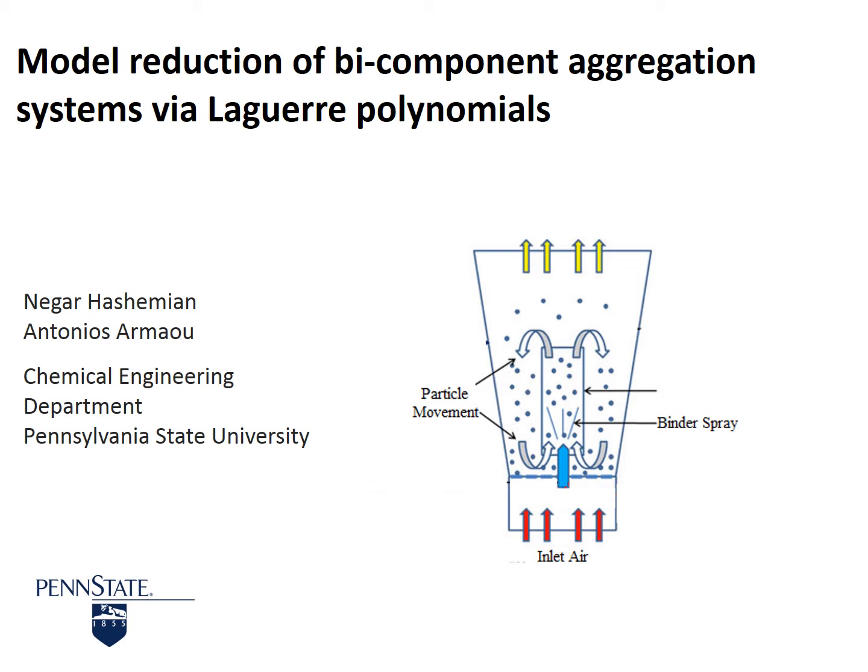Hi, I am Negar Hoshemyan from Penn State University and my advisor is Dr. Armal. Today I am going to present a new method to reduce wet granulation models in the Wurster unit. There are many dynamic systems in nature which consist of particles. Two-component granulation, which is widely used in pharmaceutical applications, is an example of these kinds of processes.